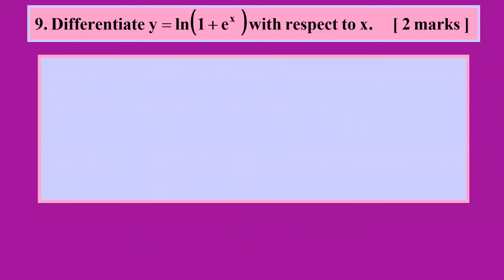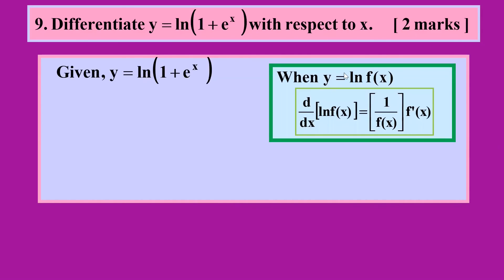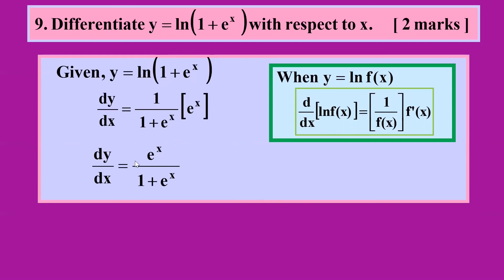For question nine, y = ln(1 + e^x). Using the formula for differentiating ln(f(x)), which gives 1/f(x) times f'(x), we get 1/(1 + e^x). Differentiating inside: differentiating 1 gives 0, differentiating e^x gives e^x. So the final answer is e^x / (1 + e^x). That gives two marks.